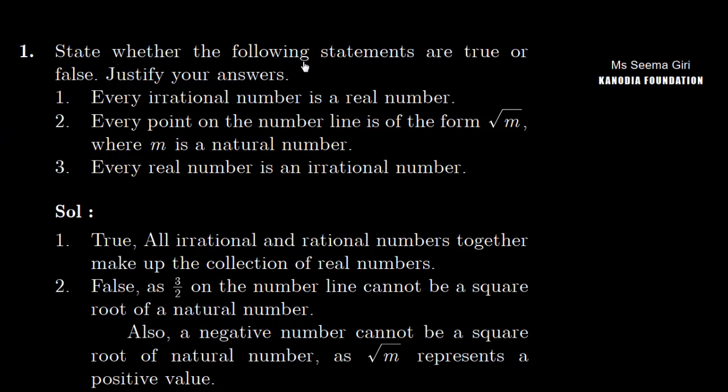Question number one: State whether the following statements are true or false. Justify your answers. First part is every irrational number is a real number. Every point on the number line is of the form of under root m, where m is a natural number. And every real number is an irrational number.